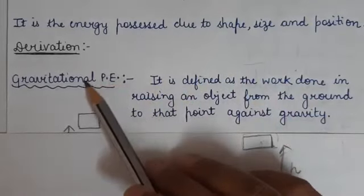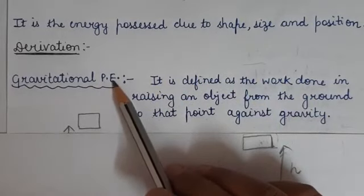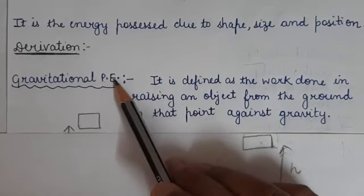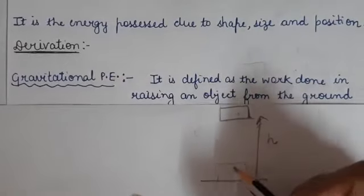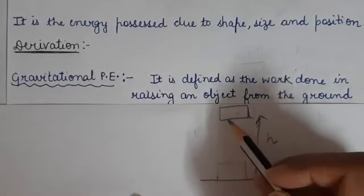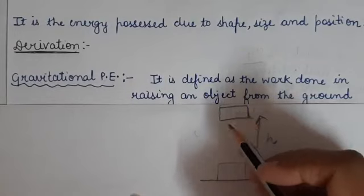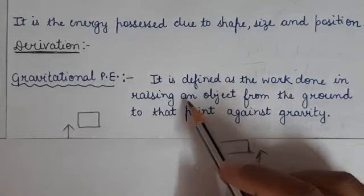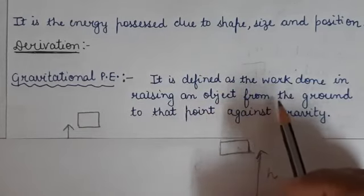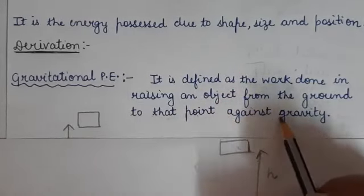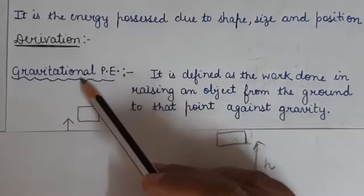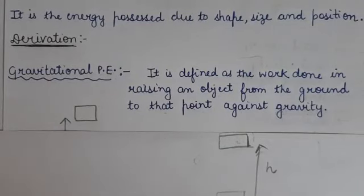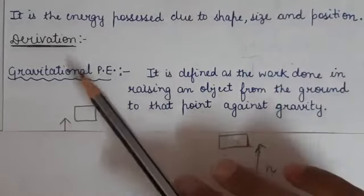Gravitational potential energy is defined as the work done in raising an object from the ground to a certain height against gravity. That is gravitational potential energy, read as P.E. When the object is raised to a certain height, the work is done on this object against gravity. The work done in raising an object from the ground to that point against gravity is gravitational potential energy.